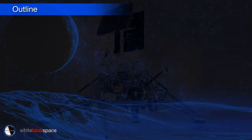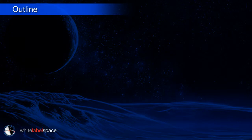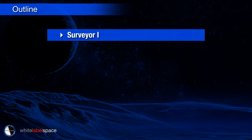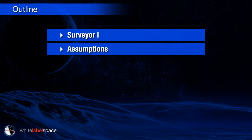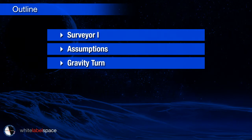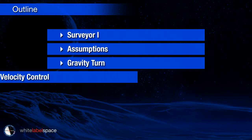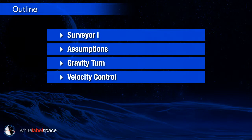During this presentation the following points will be addressed. First we will discuss why Surveyor 1 can be used as a comparison, followed by the assumptions we have made to simplify the simulator. During the terminal descent to the moon the lander performs a maneuver known as a gravity turn. Also implemented is a velocity control system active during this gravity turn, which we will discuss. In the final stages we will discuss the results and conclusions.